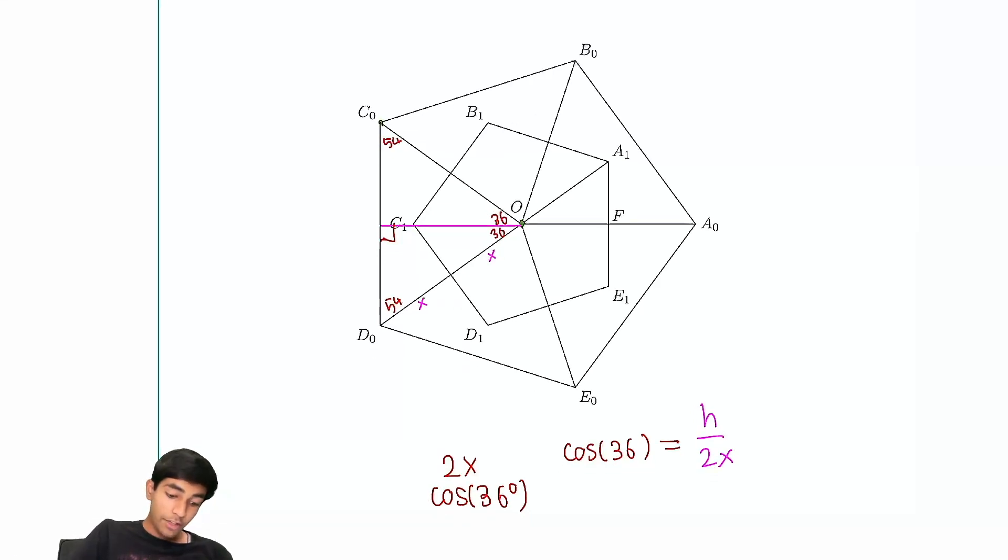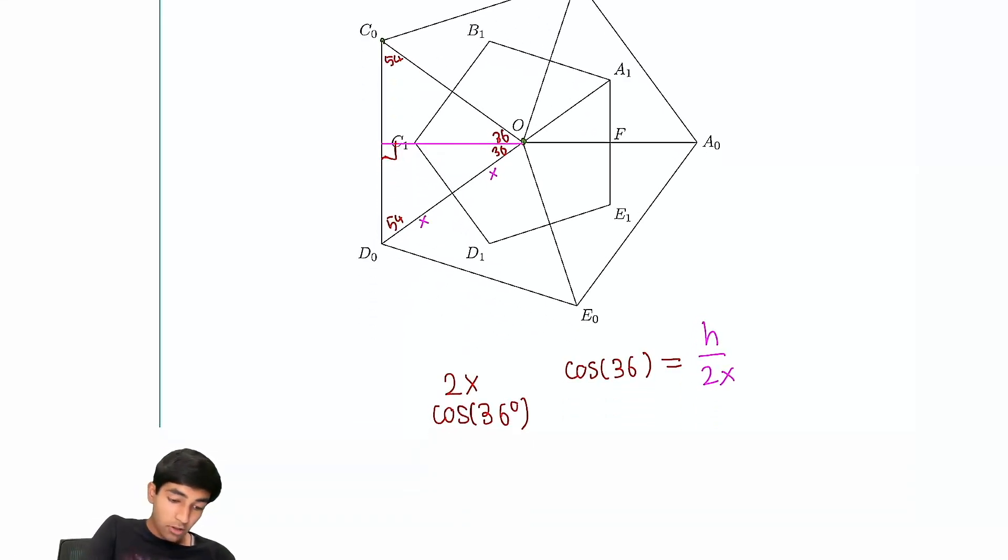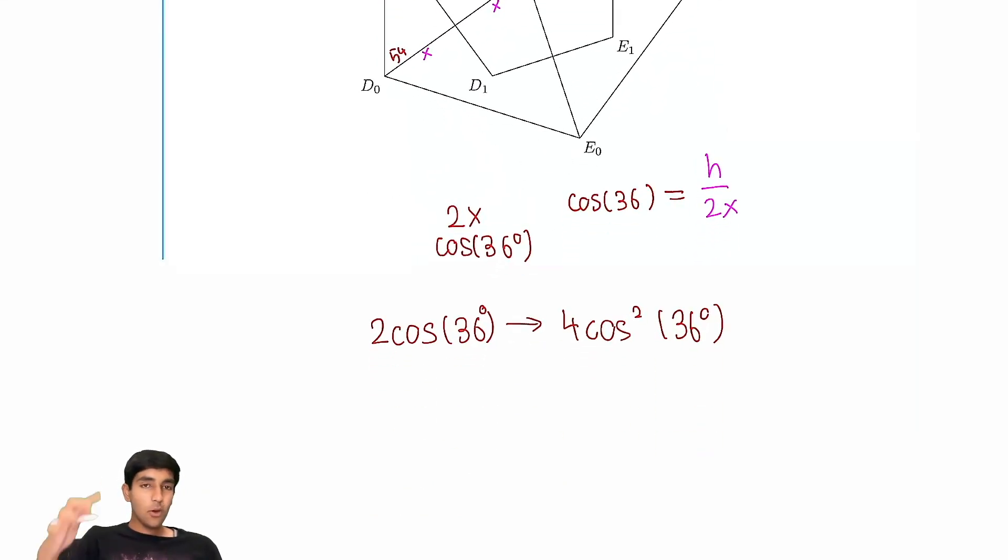So the ratio of their heights is just 2 cosine of 36. And therefore, the ratio of their areas is just 4 cosine of 36 squared. Now, for those of you who memorize the value of cosine of 36, like me, then you would just easily plug it in and solve it from here. It's super easy from here. But for those of you who don't know the value of 36, it requires a little bit of clever thinking to figure out its value.